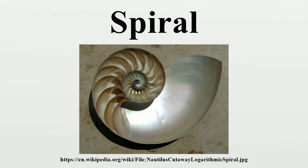The curve shown in red is a conic helix. Two-dimensional spirals may be described most easily using polar coordinates, where the radius R is a monotonic continuous function of angle theta. The circle would be regarded as a degenerate case.